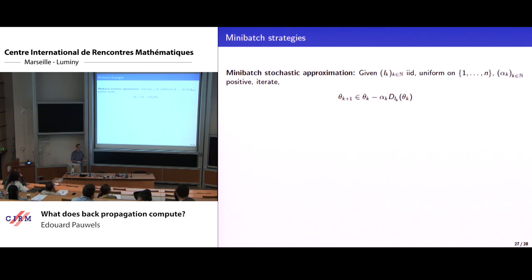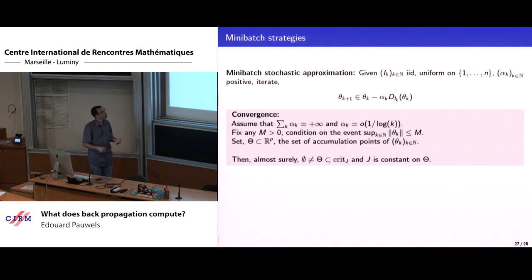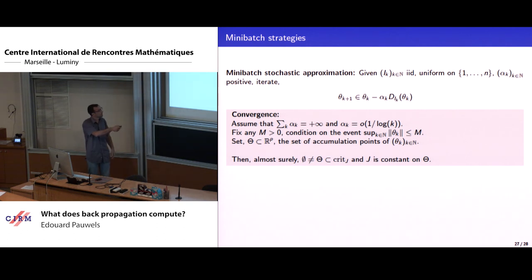Now the mini-batch strategy in stochastic optimization: at each iteration I choose an element of the sum and perform a step given by this backpropagation oracle. I want to study the stability properties. I need some assumptions: the step size must be non-summable and go to zero at a certain speed. I condition on the event that my sequence is bounded — not completely satisfactory for now, but the best we can do today.